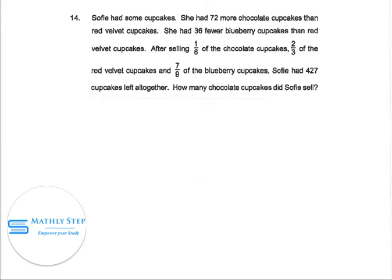Okay, we simplify this question by writing in mathematical form. Sophie had 72 chocolate cupcakes, so we use CC rather than chocolate cupcakes. Let's assume this much.